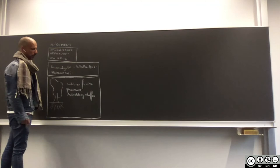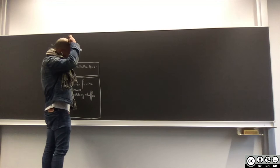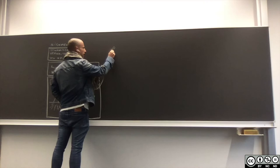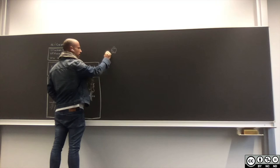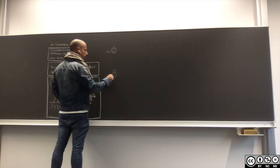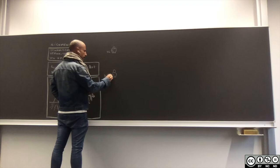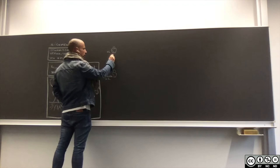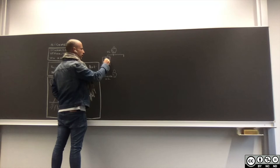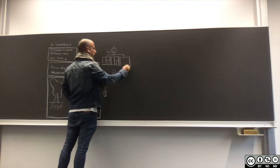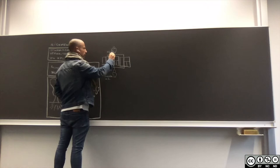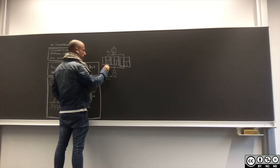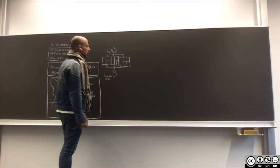Das Beste ist, dass wir anhand eines Beispiels das Ganze darstellen. Jetzt stellt ihr euch vor, wir haben einen Werkleiter. Der hat einen Mitarbeiter, das ist der Produktionsleiter. Und dieser Herr, der Produktionsleiter, ist aufgefordert, mit drei Kennzahlen an seinem Chef zu berichten. Einmal Qualität, einmal Produktivität und einmal Durchlaufzeit.